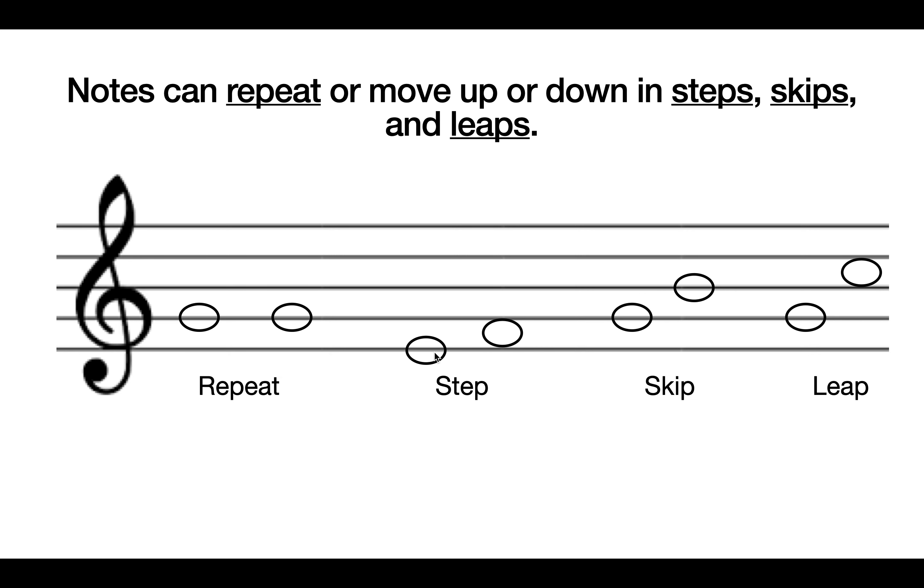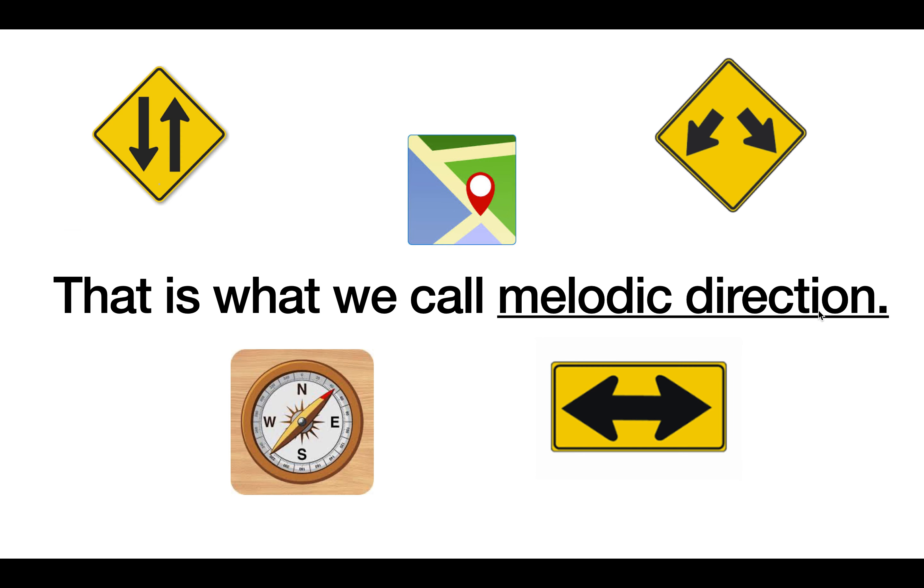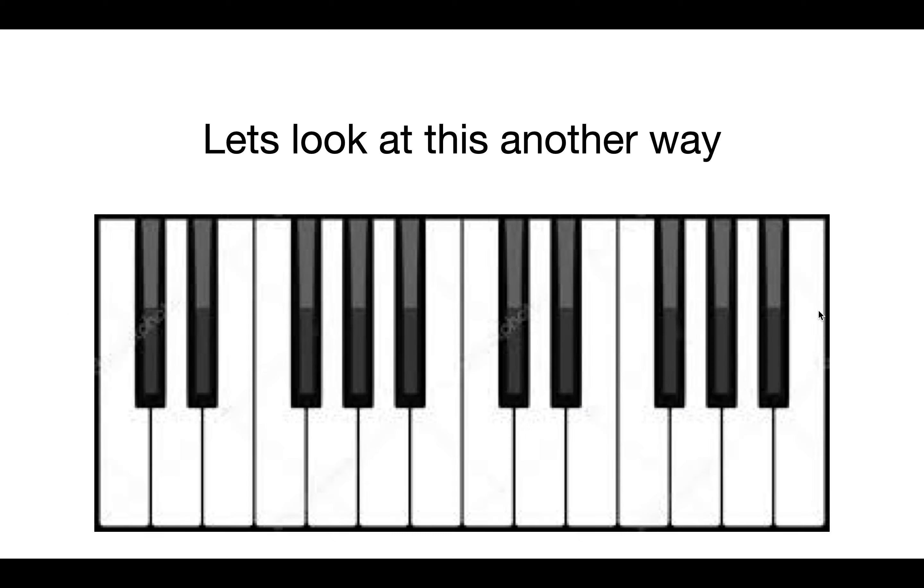Here we have what a step looks like on the staff. Here we have what a skip looks like on the staff. And here we have what a leap looks like on the staff. And that's what we call melodic direction: when notes go up and down, stepping, skipping, and leaping.